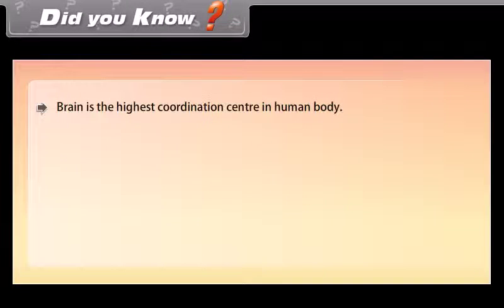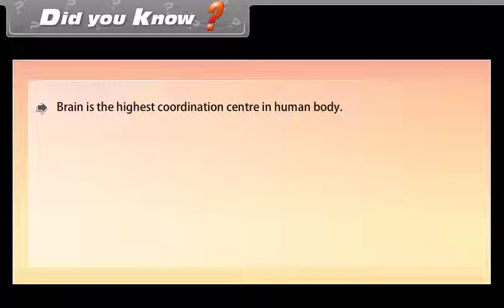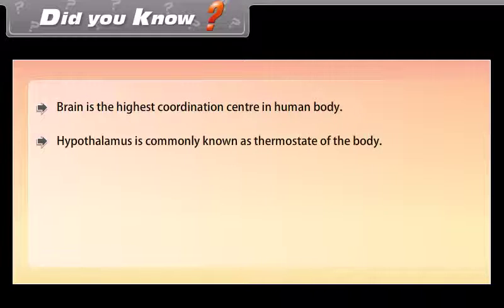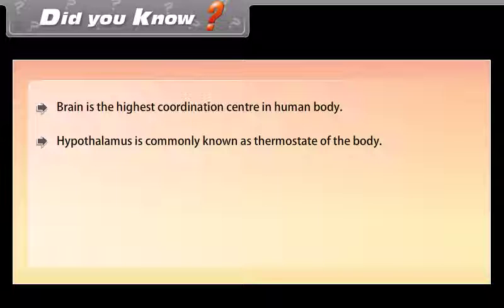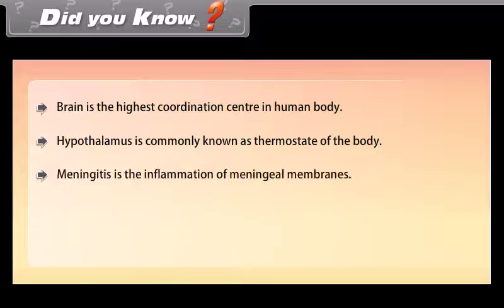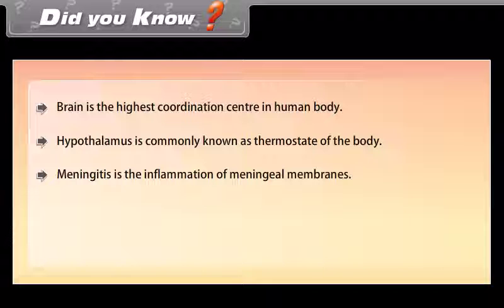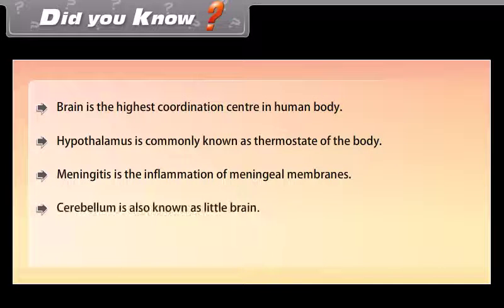Did you know? The brain is the highest coordination center in the human body. The hypothalamus is commonly known as the thermostat of the body. Meningitis is the inflammation of meningeal membranes. The cerebellum is also known as the little brain.